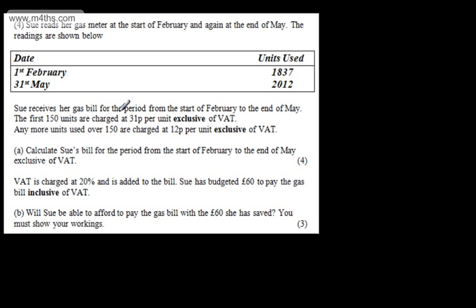This is question number four and it's a calculator question. We're told Sue reads a gas meter at the start of February and again at the end of May. The readings are shown below — we have a date and the units used. On the 1st of February, 1837 units have been used. On the 31st of May, 2012 units have been used.